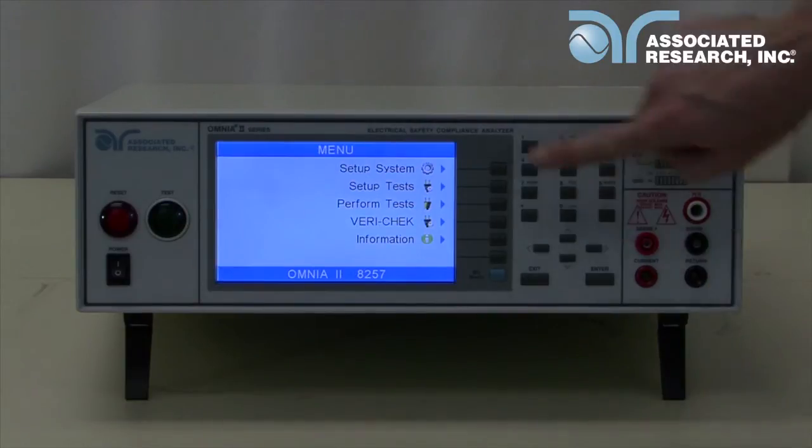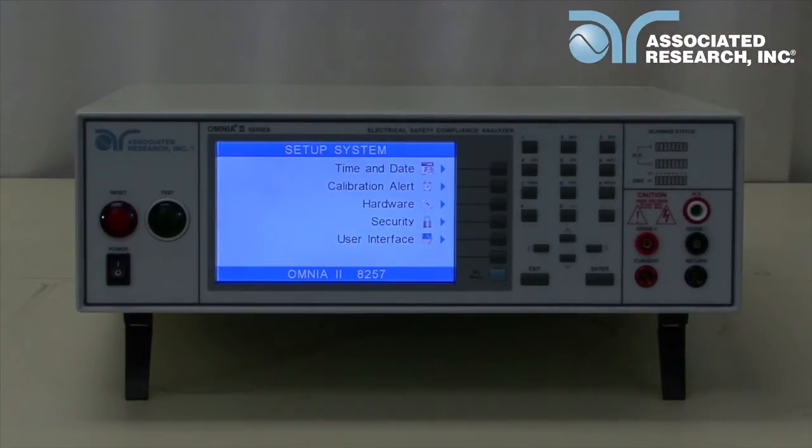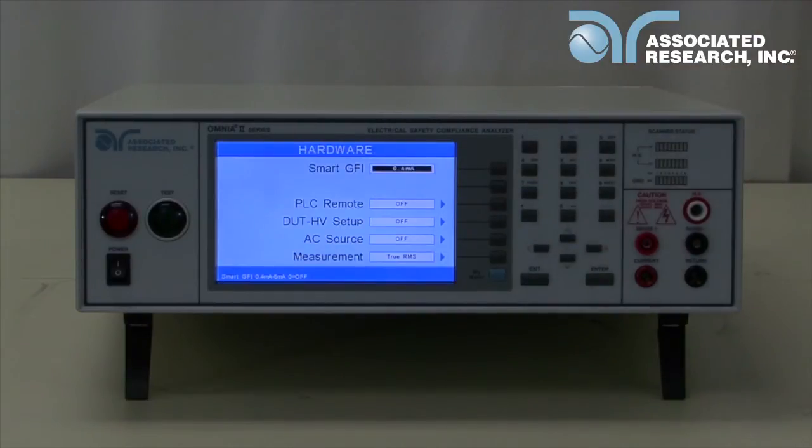To set the internal source, press the setup system soft key from the main menu. Next, press the hardware soft key. In the hardware menu, there will be a selection for the AC source. Press the soft key to turn the AC source to on.